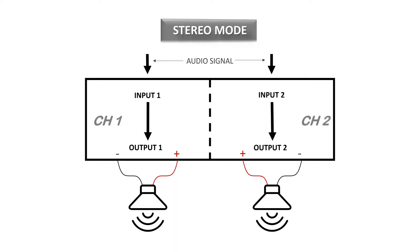These modes define the relationship between the amplifier's inputs and outputs. Let's start with the first mode: stereo. I'd like to refer to this mode as independent mode, because it basically treats the amplifier channels as two completely separate and independent channels. Input to channel 1 goes to the output of channel 1 with its own separate level control and processing. The same thing is applicable to channel 2.